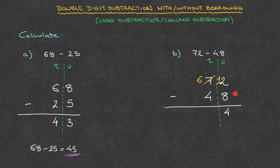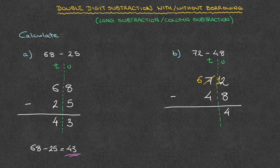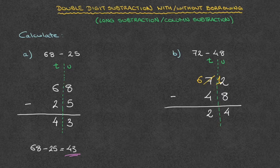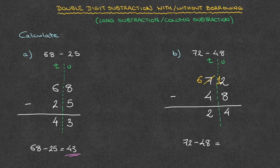Now that we've taken care of the units column, we take care of the tens column, in which we have 6 minus 4. And 6 minus 4 is 2, so we write 2 at the bottom of the tens column. And we're done. We can now state that 72 minus 48 equals 24.